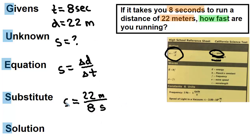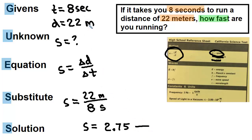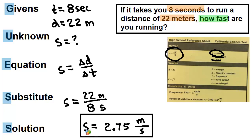The equation is s = d/t, copied from the formula sheet. Substituting: s = 22 meters / 8 seconds. Speed is already by itself on the left, so calculate 22 divided by 8 and get 2.75. For units, speed is distance over time — meters over seconds — so the answer is speed equals 2.75 meters per second.